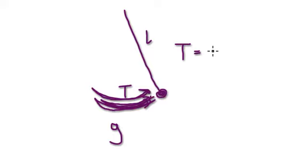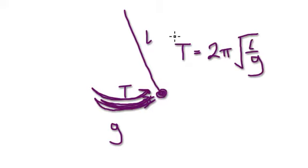For example, take the formula for a pendulum. Let's say you've got a pendulum swinging back and forth. The length of the string is L, G is gravity, and capital T is the time it takes to make one swing — from here, up here, and back. The formula is T equals 2 pi root L over G.